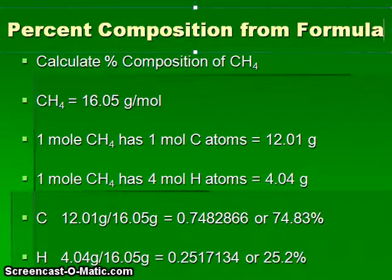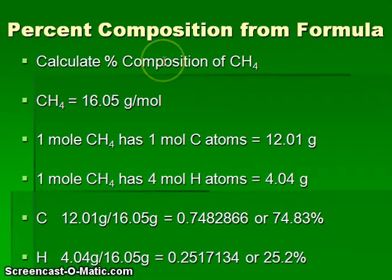To calculate a percent composition from formula, we're going to need to use a molar mass for a compound. Since we calculated the molar mass of methane earlier, we'll use that as our example here. Now, the molar mass of methane was 16.05 grams per mole.